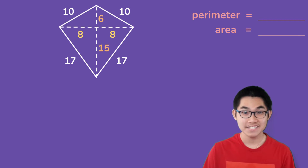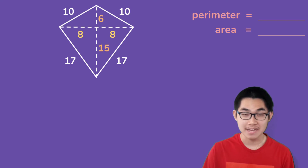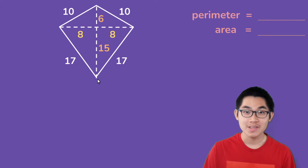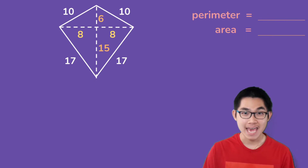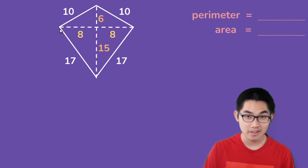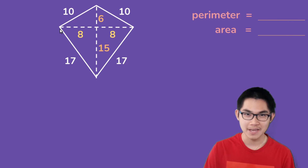This video is about finding the perimeter and the area of kites. If you own a kite at home, you know that it looks something like this, and you might also know that if you take this kite from this end and fold it in half to the other end, it folds perfectly.